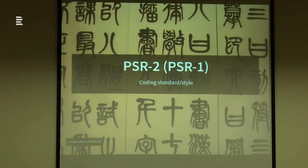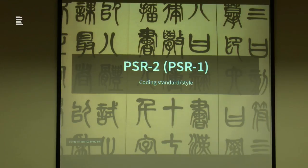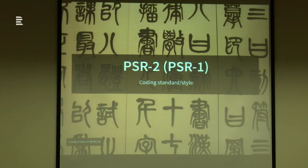PSR-1 was the original coding standard PSR — it covers naming conventions: how to name your constants, your classes. PSR-2 builds on that with a more style-oriented approach, like this type of indentation. PSR-1 is really functional, changing your actual logical code, while PSR-2 is purely cosmetic. Officially, if you want to use PSR-2, you must also adopt PSR-1.